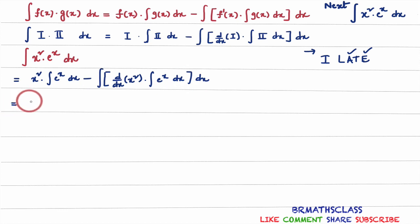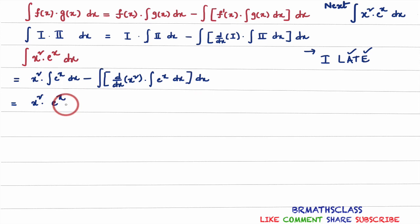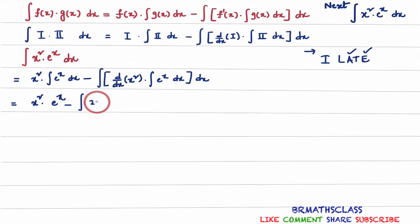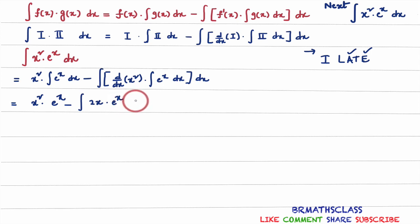If we simplify this further: x squared into integral of e power x dx. The easiest formula in integration — integral of e power x dx is e power x — minus integral of derivative of x squared. We know derivative of x squared is 2x, so: derivative of x squared is 2x into integral of e power x dx. I will simplify this further.